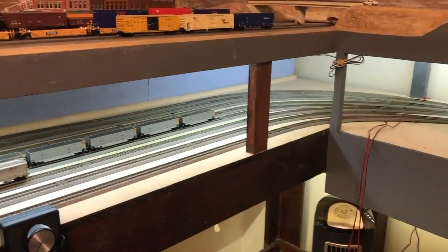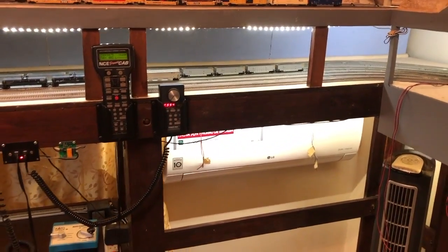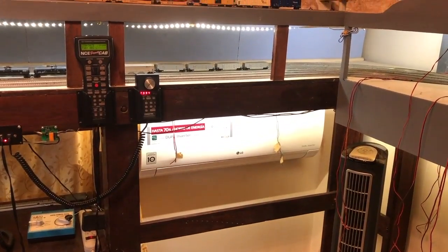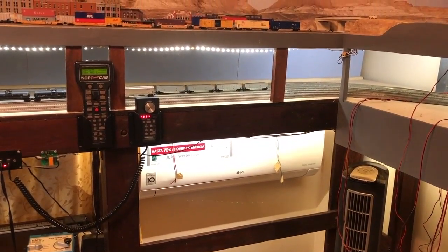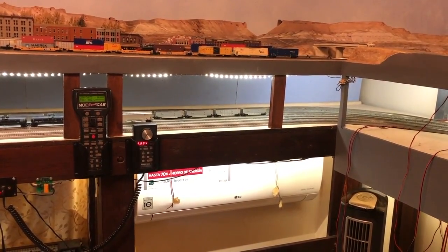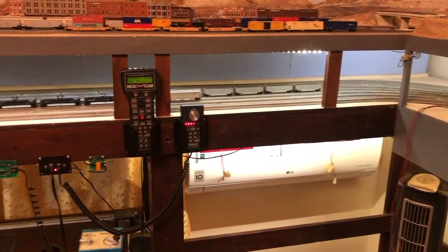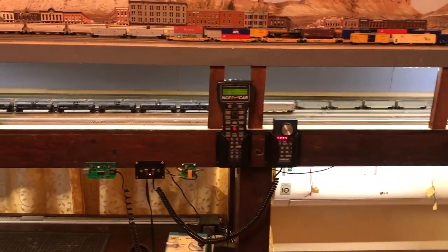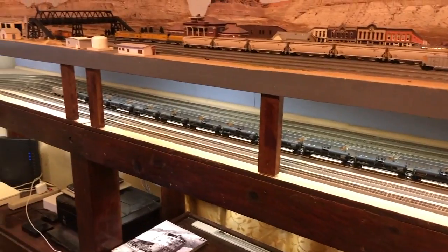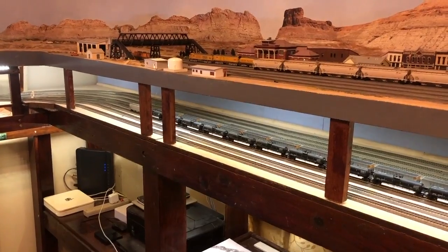Now we've reached the main part of my layout. This was the first part of the layout I built back in 2014. There is a double-ended 8-track staging yard on the lower level and the main classification yard at Green River on the upper level with 8 inches of clearance between the two levels.